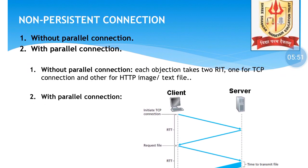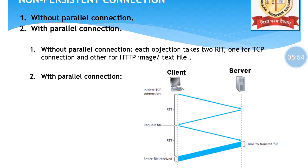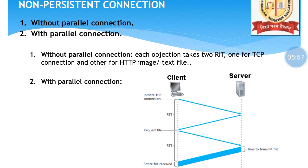Non-persistent connections are of two types: with and without parallel connections. Without parallel connection, each object takes 2 RTTs — one for TCP and one for HTTP. In a parallel connection, the client initiates a TCP connection to the server, which comes back as 1 RTT, and then a request file is sent from client to server.